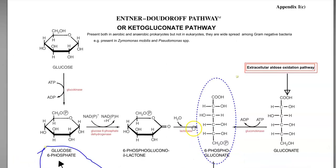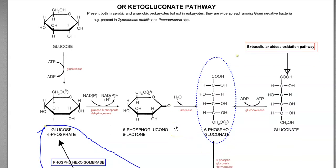Now we look at the steps of the Keto-Gluconate or Entner-Doudoroff pathway. Glucose is metabolized with the help of glucokinase enzyme into glucose-6-phosphate. Further, glucose-6-phosphate is metabolized by glucose-6-phosphate dehydrogenase enzyme into 6-phosphogluconolactone. With the help of lactonase enzyme, it is converted into 6-phosphogluconate, which is an important intermediary compound in this ED pathway.